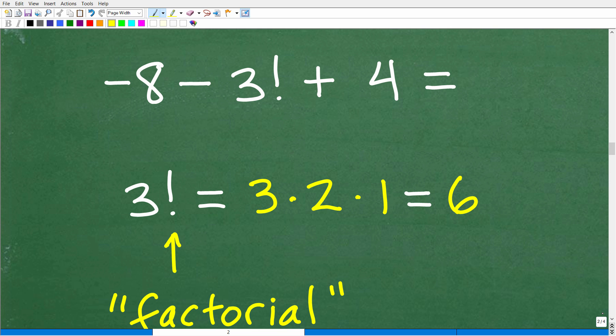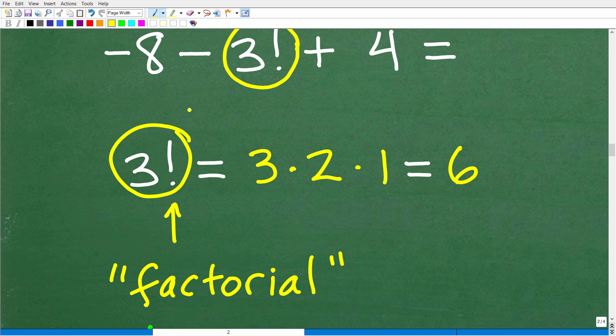Back to the problem here. We have negative eight minus three factorial plus four. So what is three factorial? The best way to explain a factorial is to see it in action. Three factorial means three times two times one. We're going to start with the number three, and then we're going to decrease by one. We're going to make one big multiplication product. So we're going to start with three and then we're going to just drop down by one, so that's going to be two. We'll drop down by one and now we can't go any further. So it's three times two times one is six. So three factorial is six.